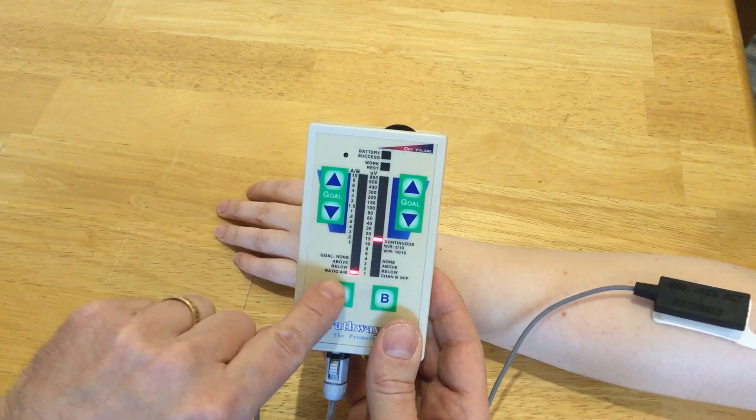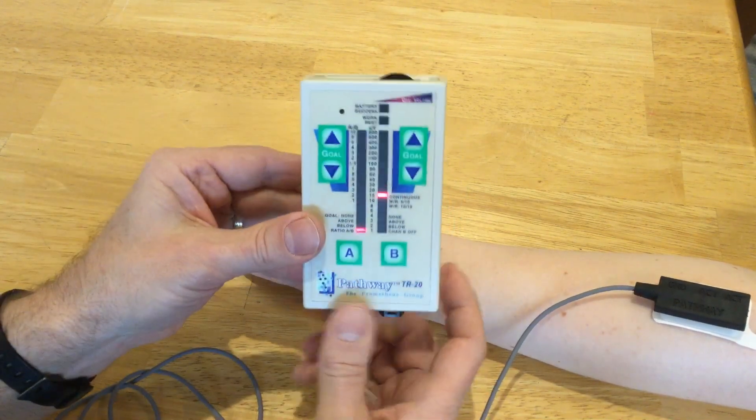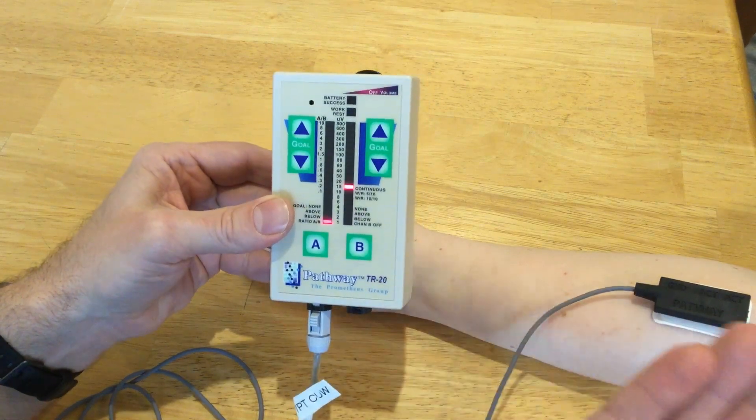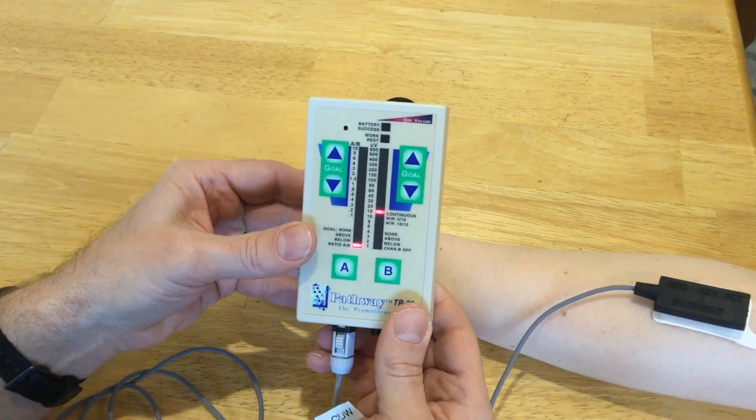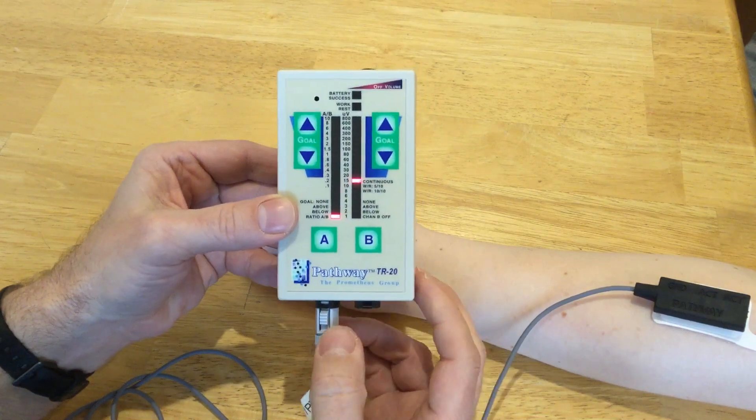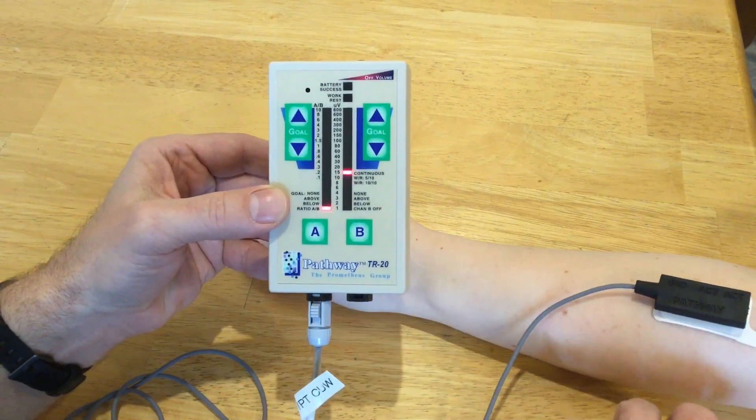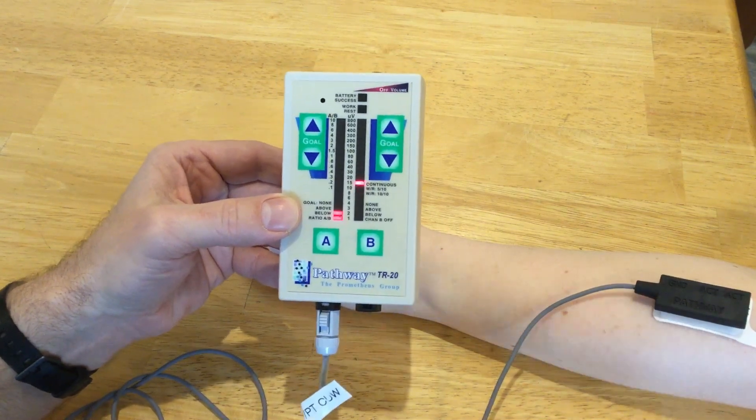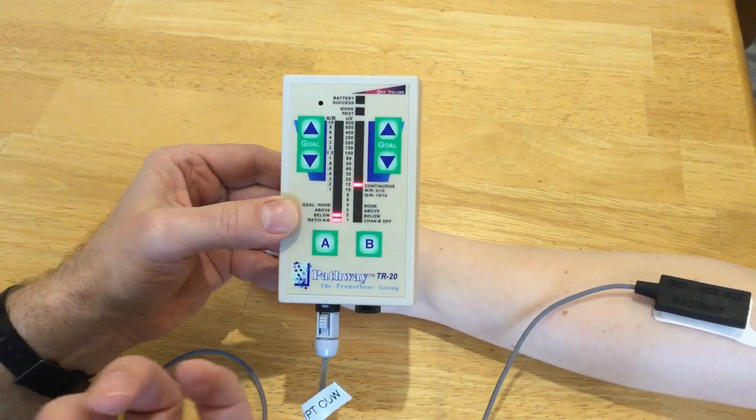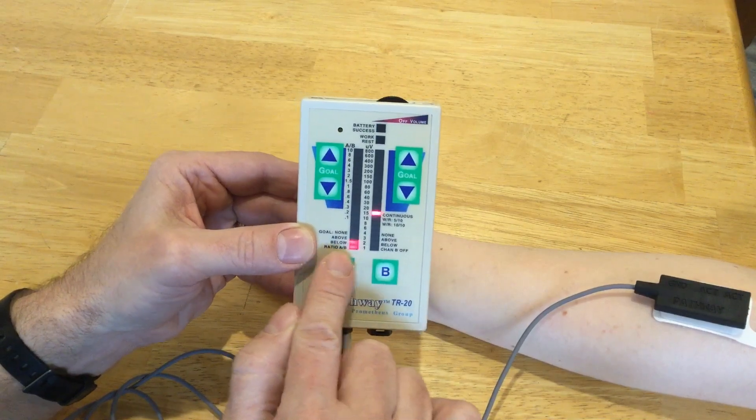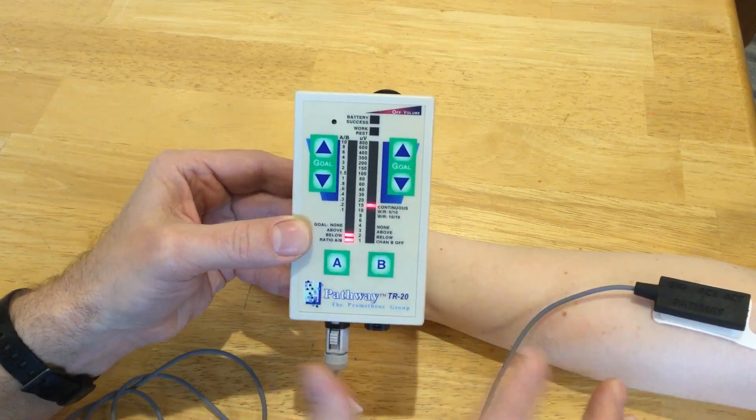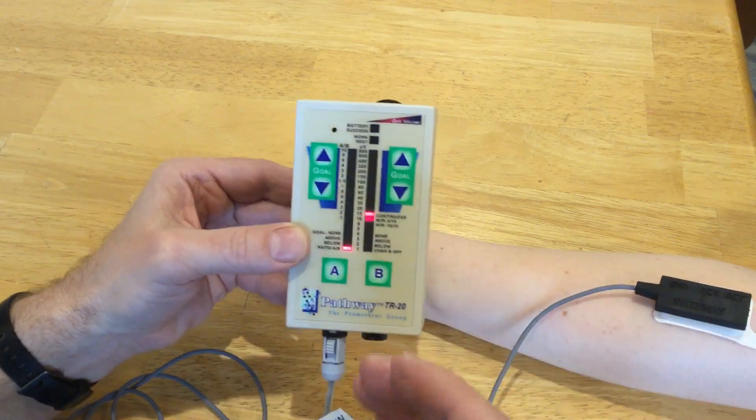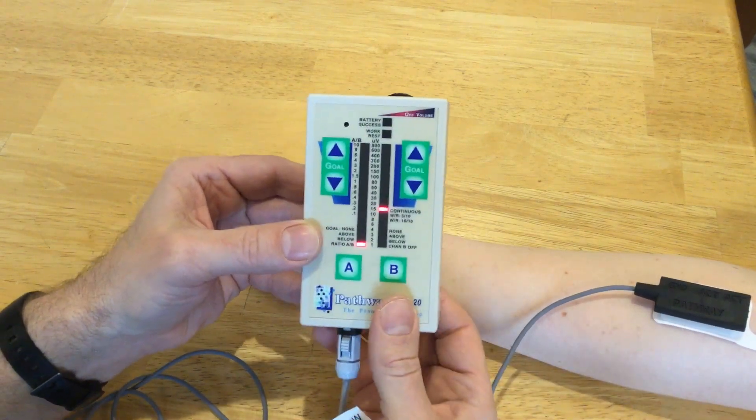Finally, you can set a goal for a ratio of whatever is plugged into channel A to whatever is plugged into channel B. For example, if they're using one muscle too much to substitute, you might say I want the substituting muscle to relax while the one that's supposed to do the job is actively firing. You would do that with the ratio A to B, and set it so that when one is doing half of what the other is, the way you want it to, it will let the client know.